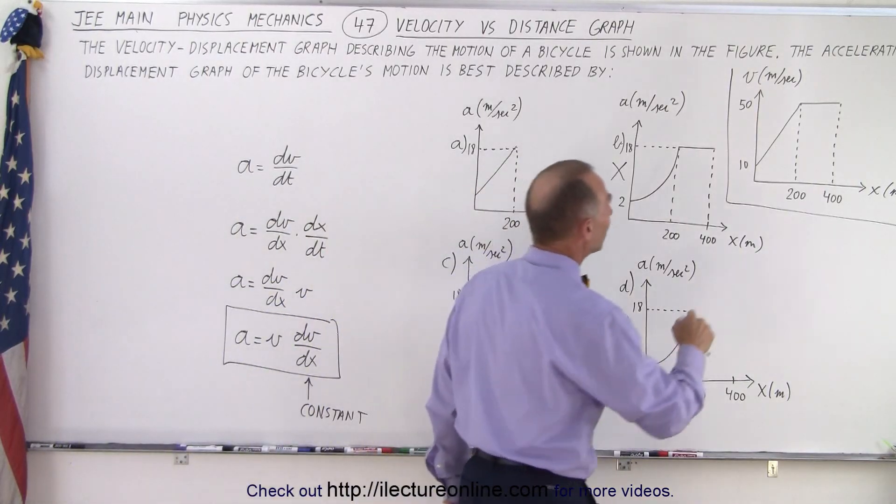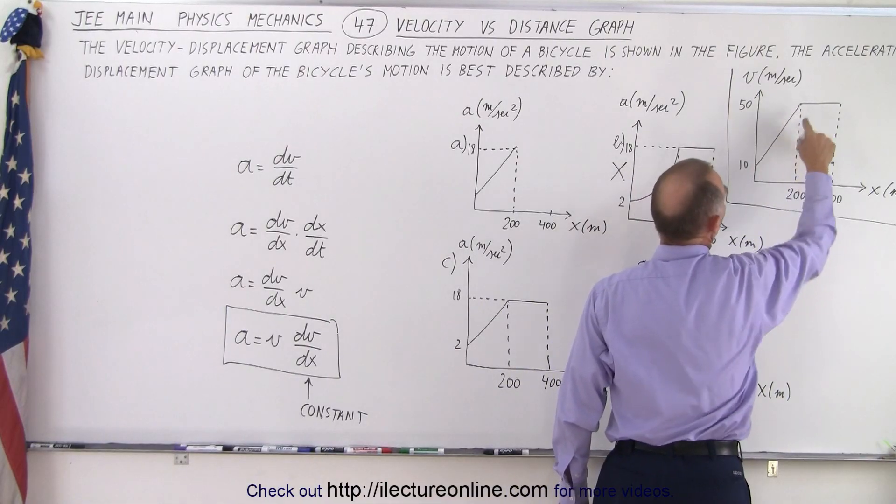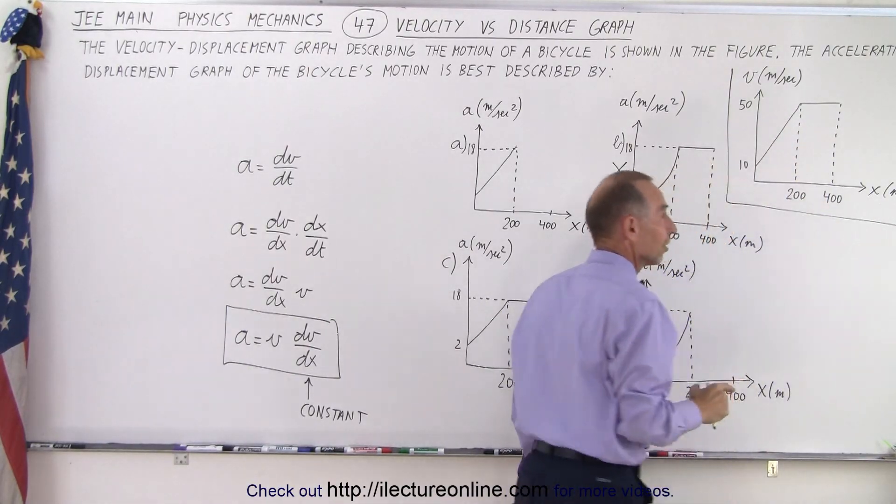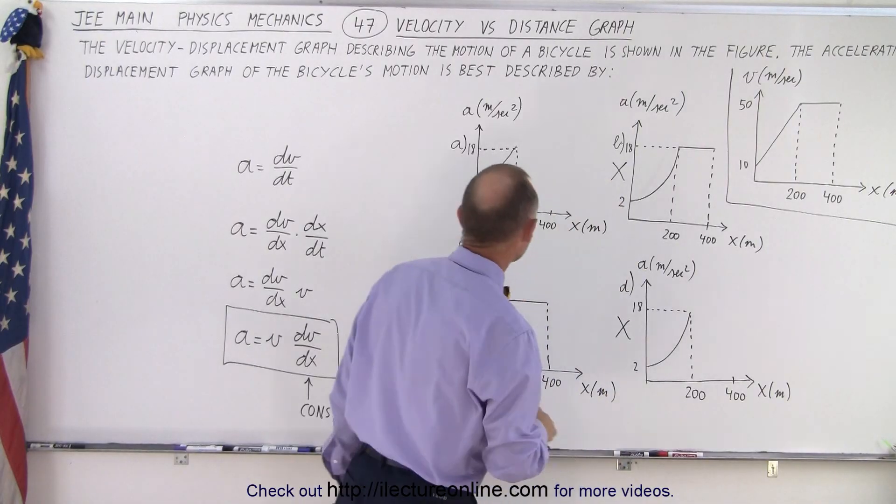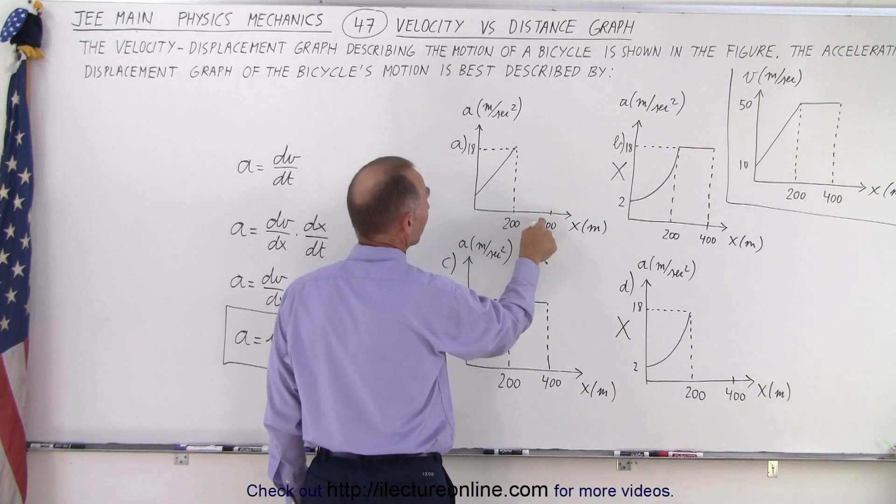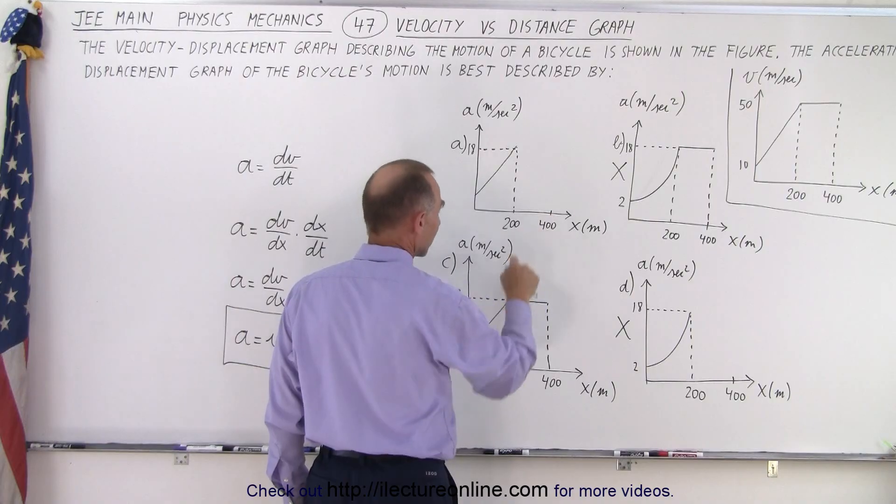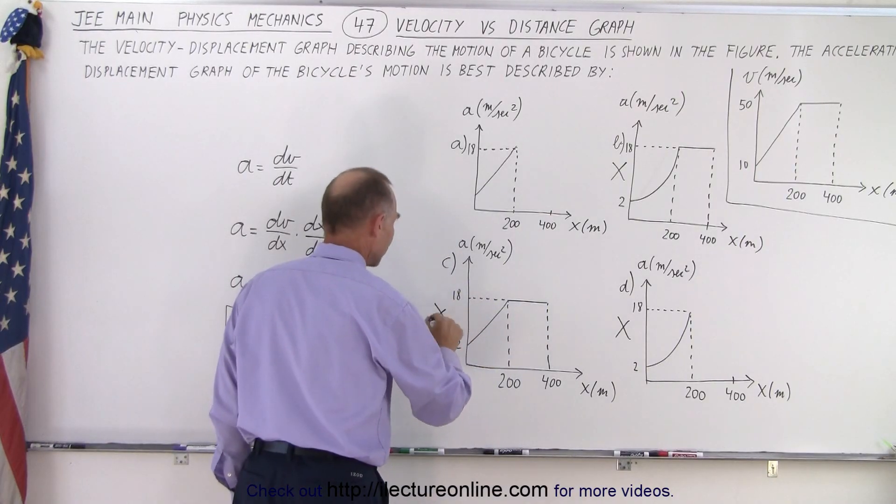Also notice that the velocity no longer changes from 200 meters to 400 meters. If the velocity doesn't change, the acceleration must be zero. That means for that part, it must be zero. So since only zero here and not zero there, this cannot be the solution.